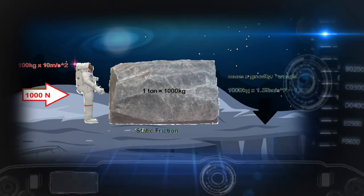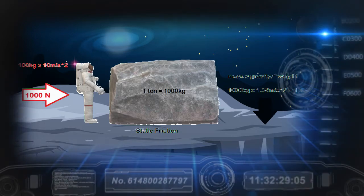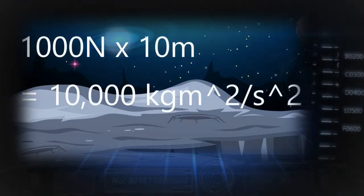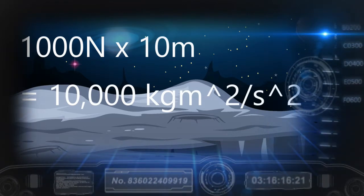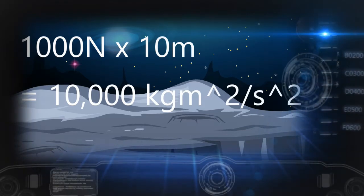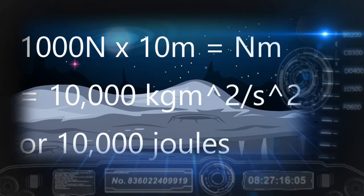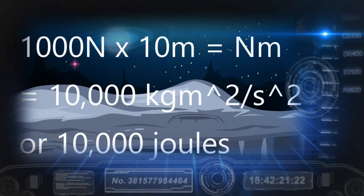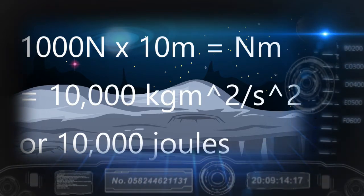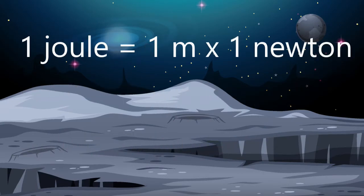If the cube moves, then we can say that work has been done. If the cube slides 10 meters, the work performed was force times distance: 1,000 newtons times 10 meters gives us 10,000 newton meters of work. The unit of work is newton meters, or kilogram meters squared over seconds squared, which is also a joule — the standard unit for energy. A joule is the amount of energy required to move something one meter against one newton of force. If the cube does not move, then no work was done.